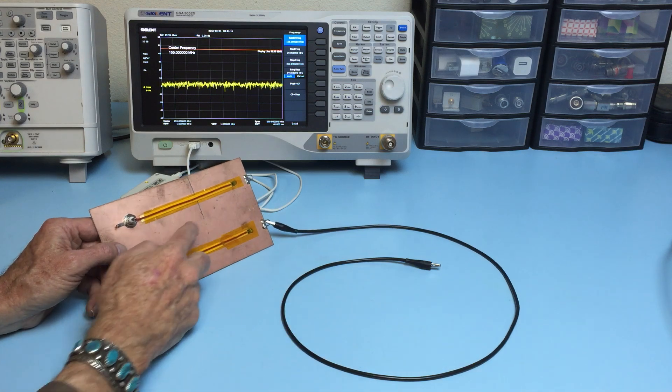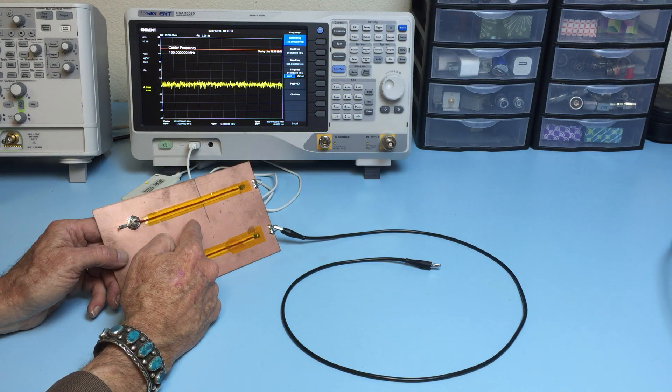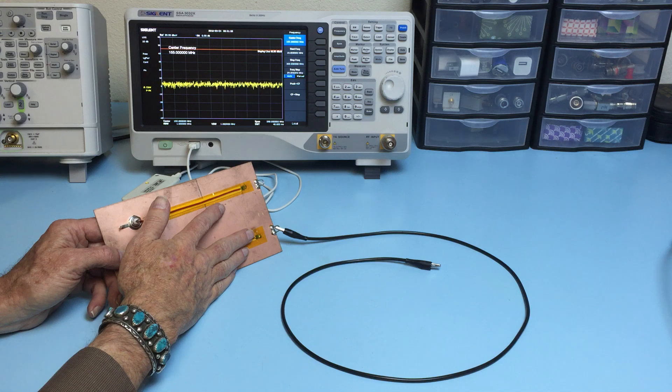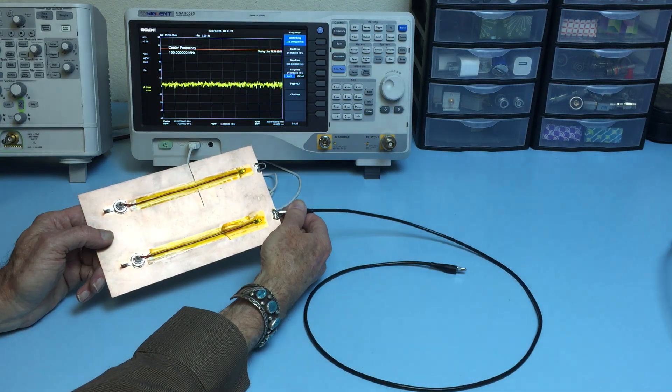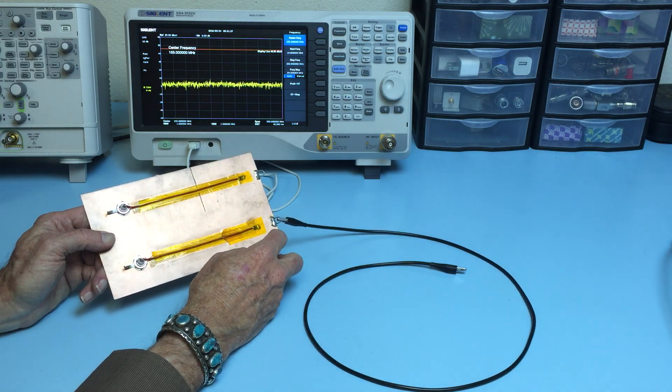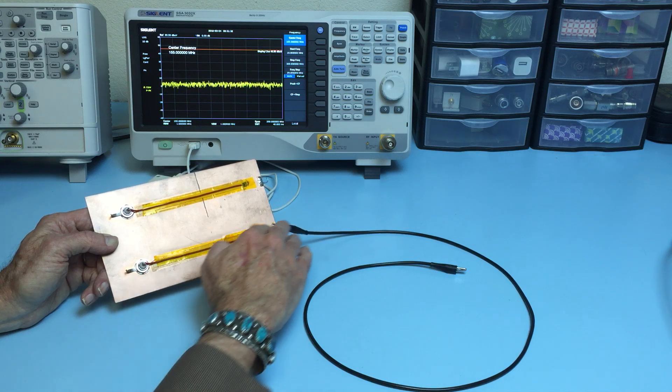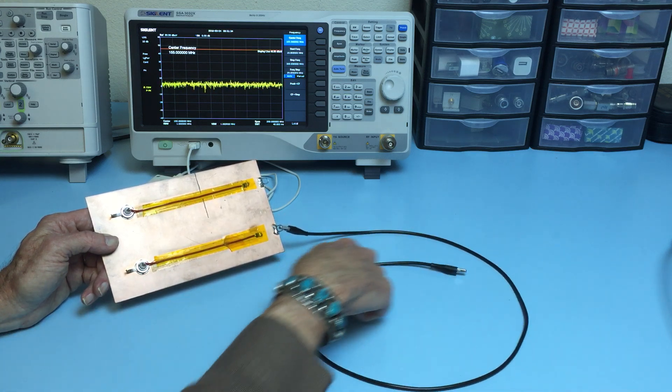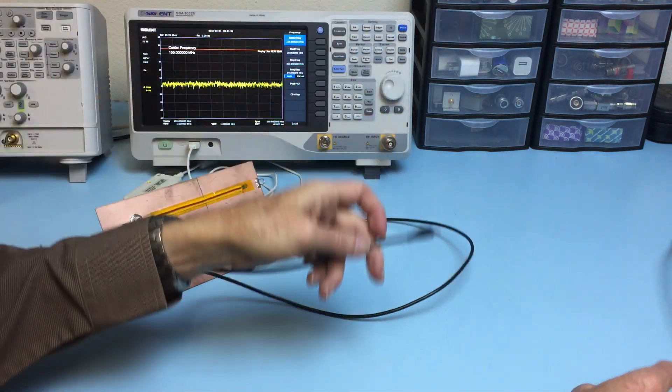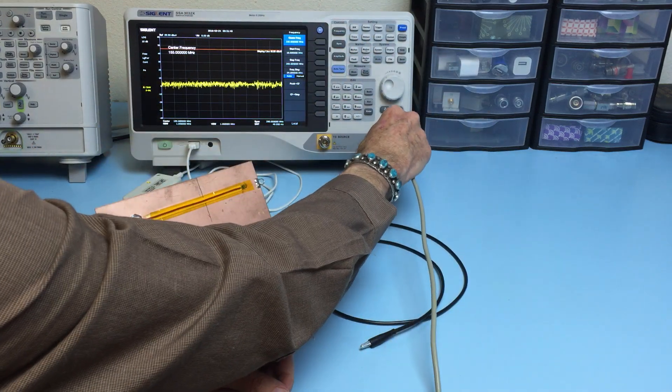Now, the gap here causes large amounts of what we call common mode currents to flow throughout this whole board. And connecting, say, the shield connection of a USB to the ground plane or return plane of this board will allow these common mode currents to flow out this cable. And the cable will actually radiate just like an antenna. So let me show you that using a current probe.